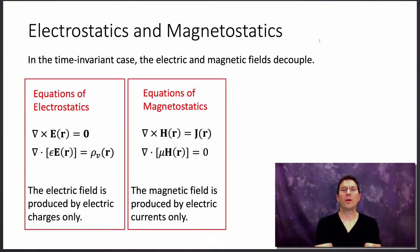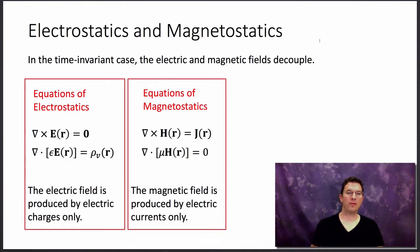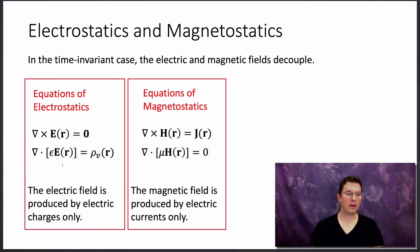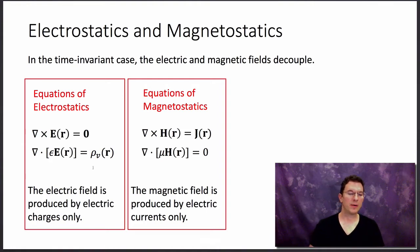Let's make a brief comparison of electrostatics and magnetostatics. In the time-invariant case, the electric and magnetic fields decouple. Looking at the equations of electrostatics: the curl of the electric field is equal to zero, and the divergence of the electric flux density D, simplified as epsilon times E, is equal to the volumetric charge density. The takeaway is that the electric field is produced by stationary electric charges only.